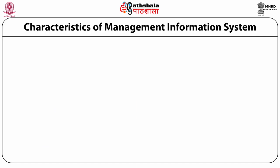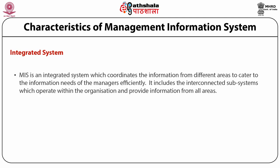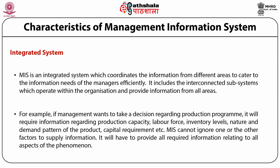The next feature of MIS is integrated system. MIS is an integrated system which coordinates the information from different areas to cater to the information needs of managers efficiently. It includes interconnected subsystems which operate within the organization and provide information from all areas. For example, if management wants to take a decision regarding a production program, it will require information regarding production capacity, labor force, inventory levels, nature and demand pattern of the product, capital requirements, etc. So MIS cannot ignore one or the other factors; it will have to provide all required information relating to all aspects of the phenomena.